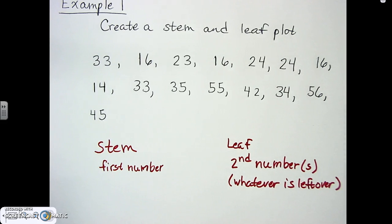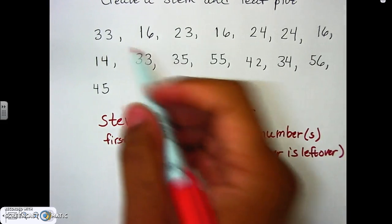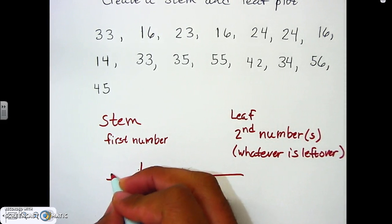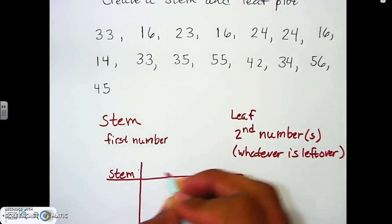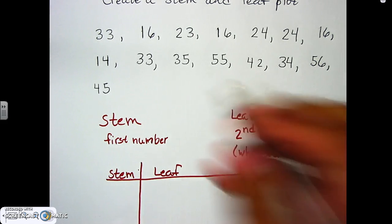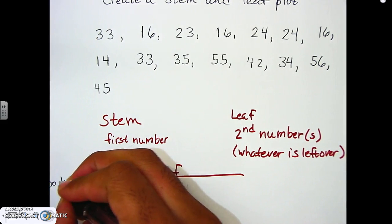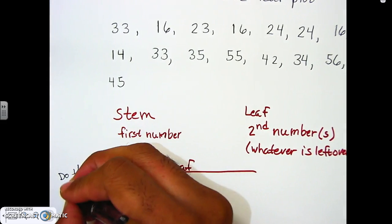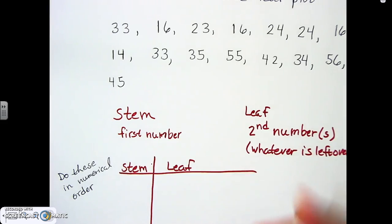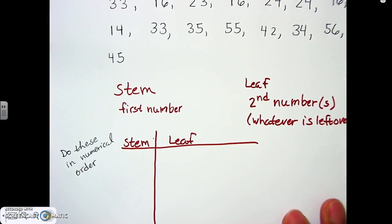When we do our stem and leaf plot, we always label this side 'stem' and always label this side 'leaf.' It's important that you label both so I know you understand what's going on. The plot must be done in numerical order — it can't be random. When we start placing our numbers, they must be in numerical order.